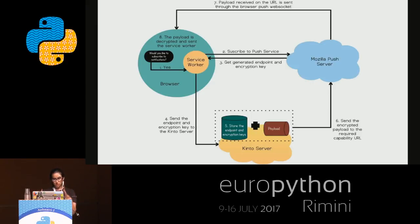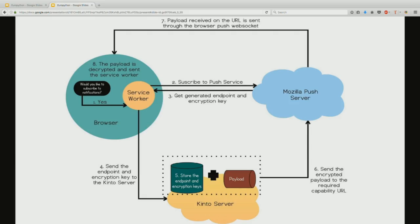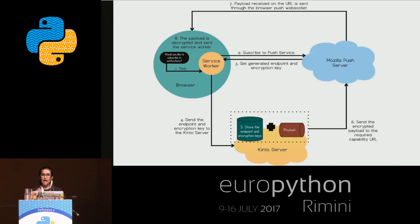When you load a website that has the facility of sending you notifications, you see a pop-up asking if you would like to subscribe. If you click allow, the service worker associated with the web app sends a request to the push server of the browser saying it would like to subscribe to notifications and requests credentials to forward to the web application server. The push server responds back with two things: one is the encryption keys, and second is the capability URL.